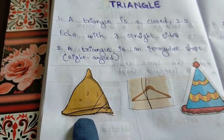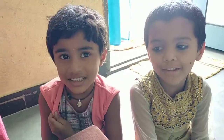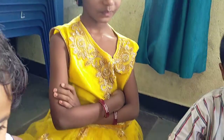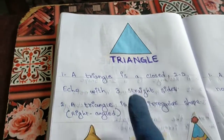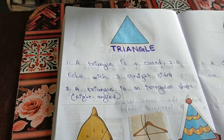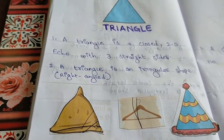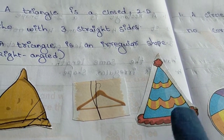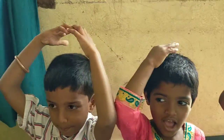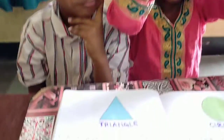Now see some objects in triangle shape. What is this? Samosa! You like to eat samosa? Yes! Samosa is in triangle shape. What is this? A hanger — we hang our clothes on it. The shape of the hanger is triangle. And this is a party cap — what is the shape? Triangle! The shape of the party cap is triangle.